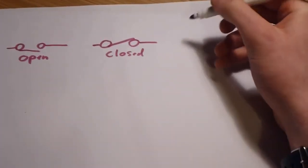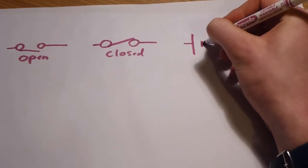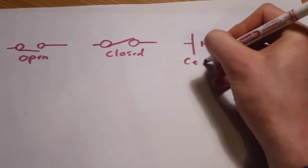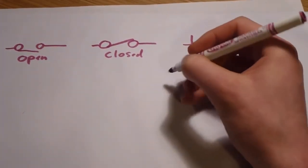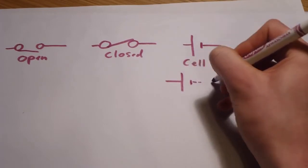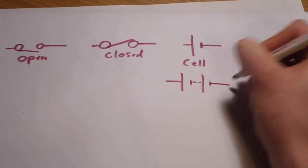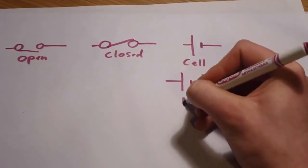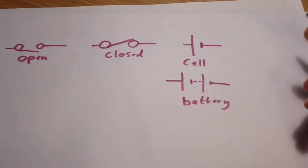After that, we have a cell. If you have more than one cell, it's called a battery.